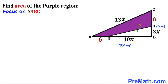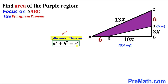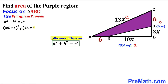Let's focus on right triangle ABC whose side lengths are 10x plus 6, 3x plus 6, and 13x. We are going to use the Pythagorean theorem to solve for x. The Pythagorean theorem states a squared plus b squared equals c squared. In our case: (10x + 6) squared plus (3x + 6) squared equals (13x) squared.